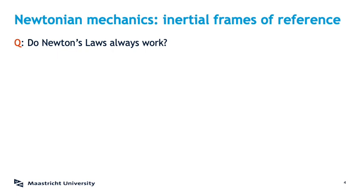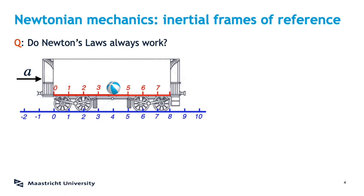To show this, let's look at two coordinate systems. One, in blue, is painted on some train tracks, and the other, in red, is painted on the floor of a train cart. I'm going to place a ball on position four in both systems. I will make the train and tracks have a relative acceleration a — this is the premise of the situation.